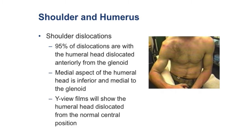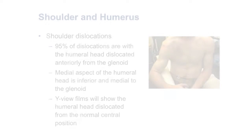The best X-rays to evaluate this are not only the AP and lateral, but the Y view, which serves as the lateral view for the shoulder. You can see displacement of the humeral head. There's a sulcus sign in this patient, indicating deformity — this is a classic dislocation picture.